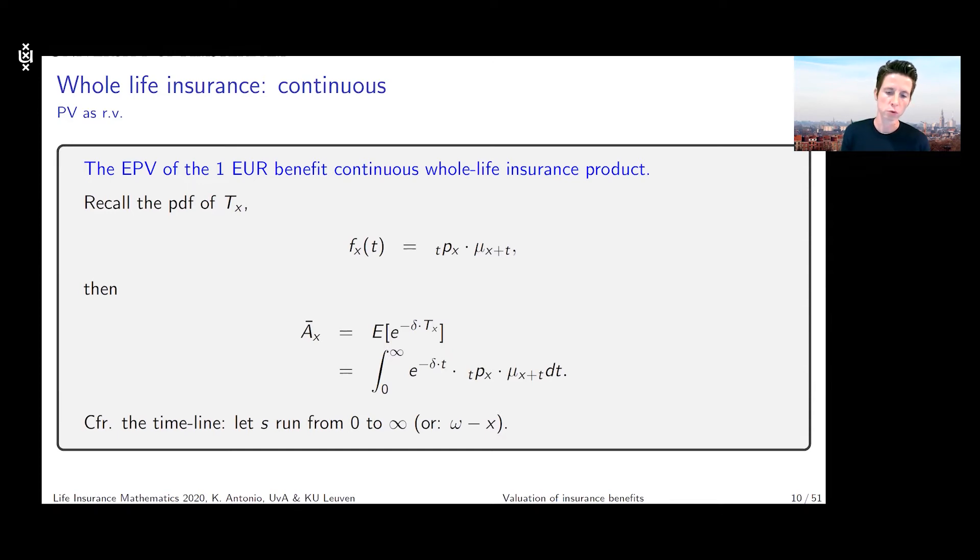I got a very good question during the break. Why do I write here omega minus x instead of plus infinity? Well, omega in our life table is the highest age possible that an individual can reach. If we look at the x-year-old, then the maximum future lifetime is omega minus x. So often instead of plus infinity we could also write omega minus x. It depends on how you prefer to write it. I will often write it with plus infinity unless there is a clear boundary that I should take into account.